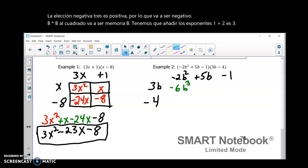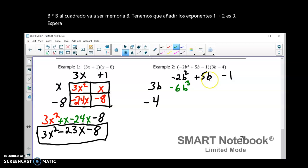And then, I'm going to do positive 5B times 3B. That gives me a plus 15B. 1 plus 1 is 2. 1 plus 1 is 2, so it is squared.